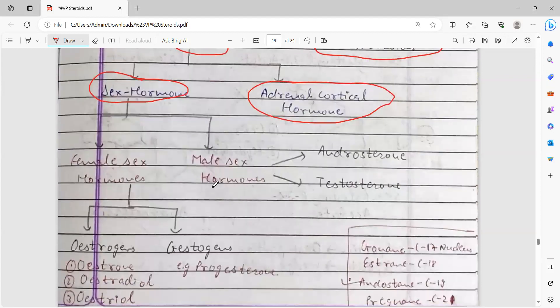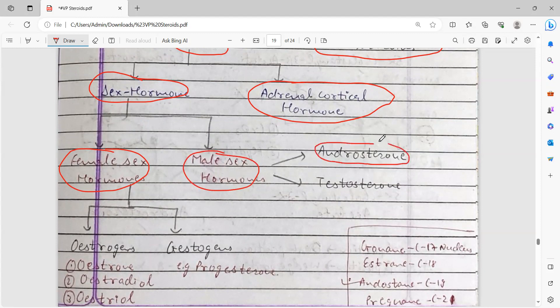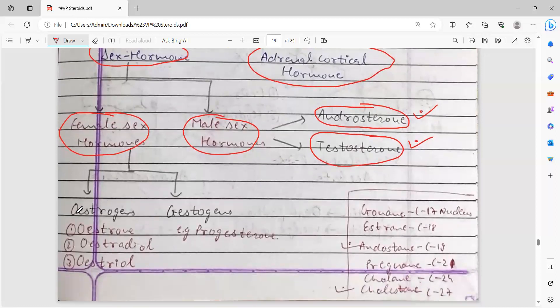Sex hormones are further divided into two categories: female sex hormones and male sex hormones. Male sex hormones are further divided into androstenedione and testosterone. Most of the university exams ask about the synthesis pathway of androstenedione and testosterone.